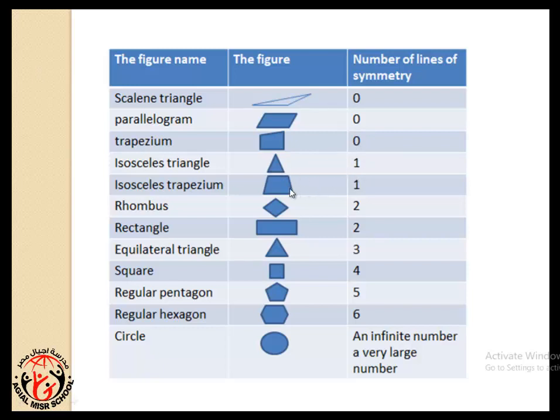Isosceles triangle, one line of symmetry. Rhombus, two lines of symmetry. Equilateral triangle, three lines of symmetry.